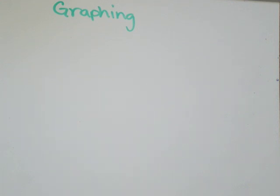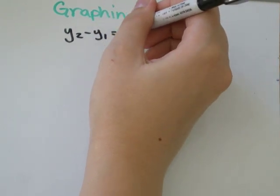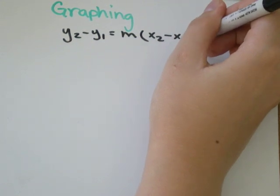So we are going to talk about this formula: y2 minus y1 equals m, m standing for slope, times x2 minus x1.